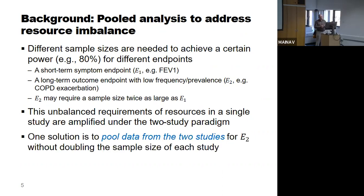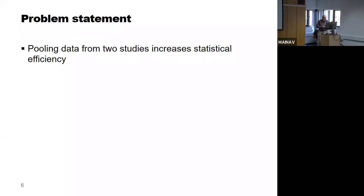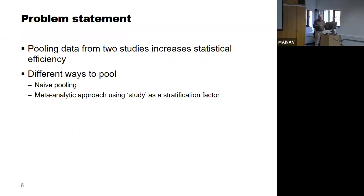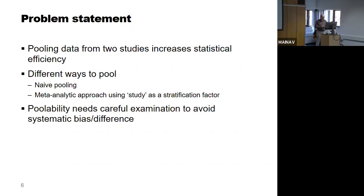One solution is to pool the data from the two studies for your hard clinical endpoint, denoted as E2. If allowed, you would not have to double the sample size — you could use the same sample size per study, pool the data, and do a pooled analysis for the hard clinical endpoint. Pooling increases statistical efficiency, and can be done using a meta-analytic approach with studies as a stratification factor. However, a careful examination of the poolability of the studies is needed to avoid systematic bias.